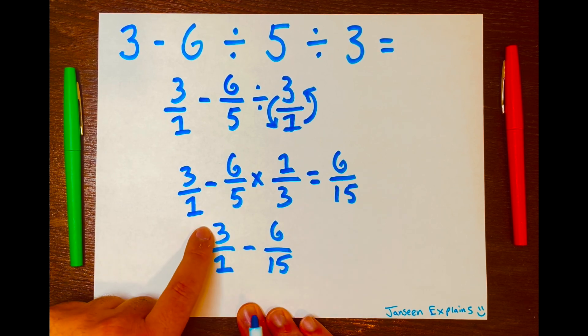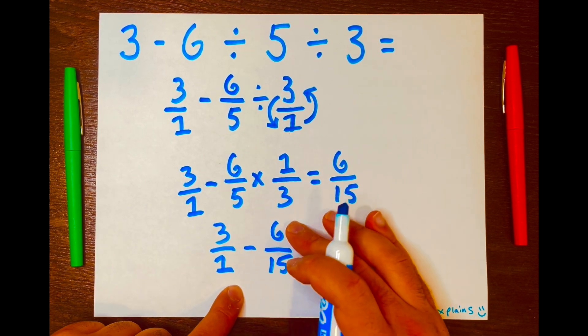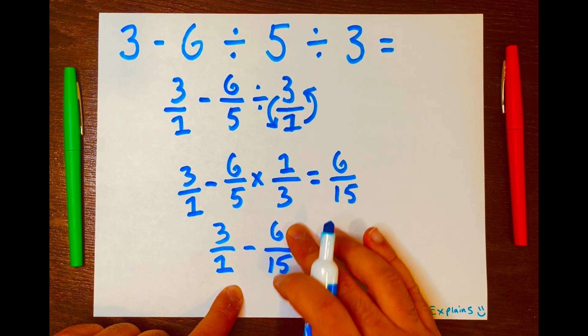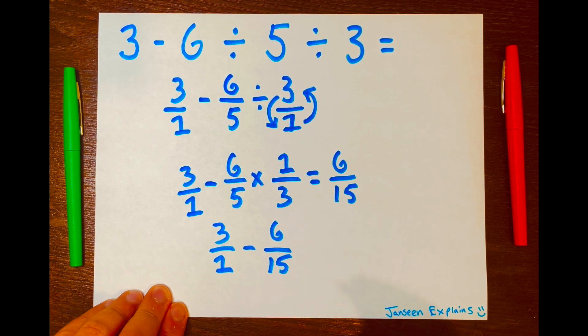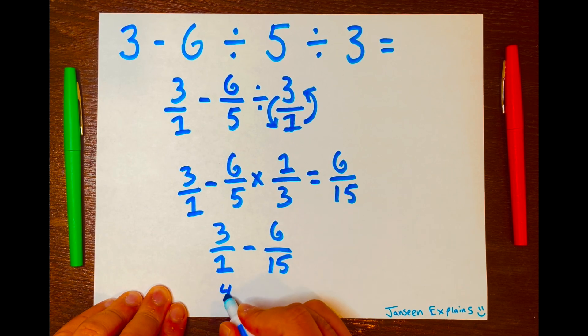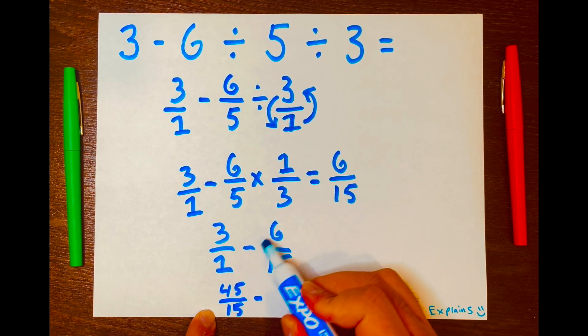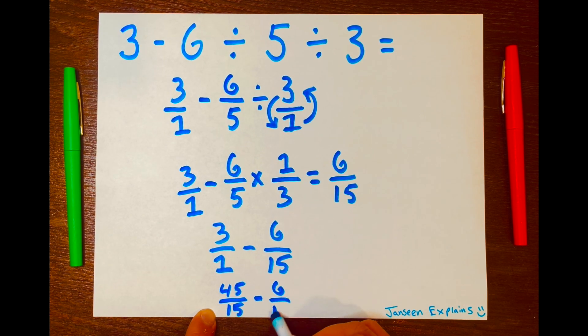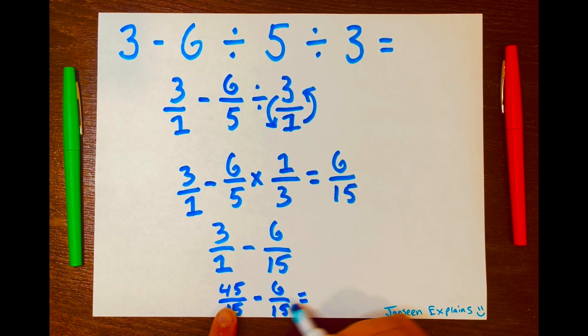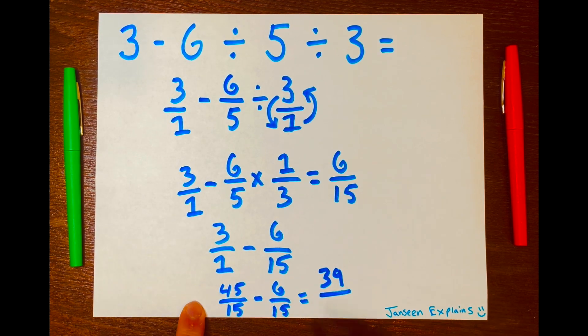And then we need a new numerator for the first fraction and a new numerator for the second fraction. To do that, you just cross multiply. So 3 times 15 is 45 over 15 because that is the new denominator. Minus 6 times 1 is 6, so we have 6 over 15. Then you just subtract 45 minus 6 is 39 over 15.